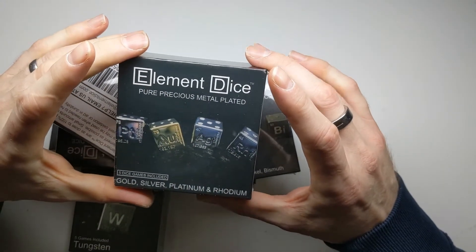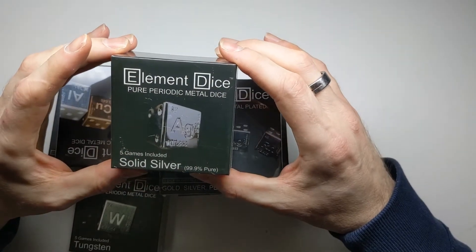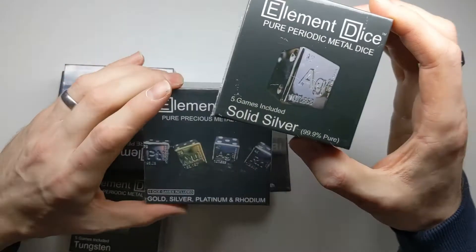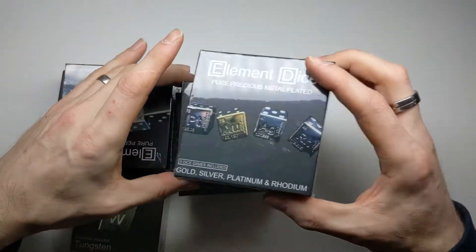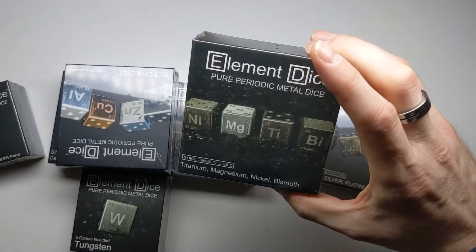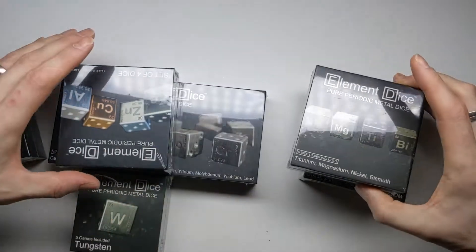And these are dice, and they're made of individual specific elements. This one is apparently solid silver. These ones are plated gold, silver, platinum and rhodium. These ones I think are solid: titanium, magnesium, nickel and bismuth.